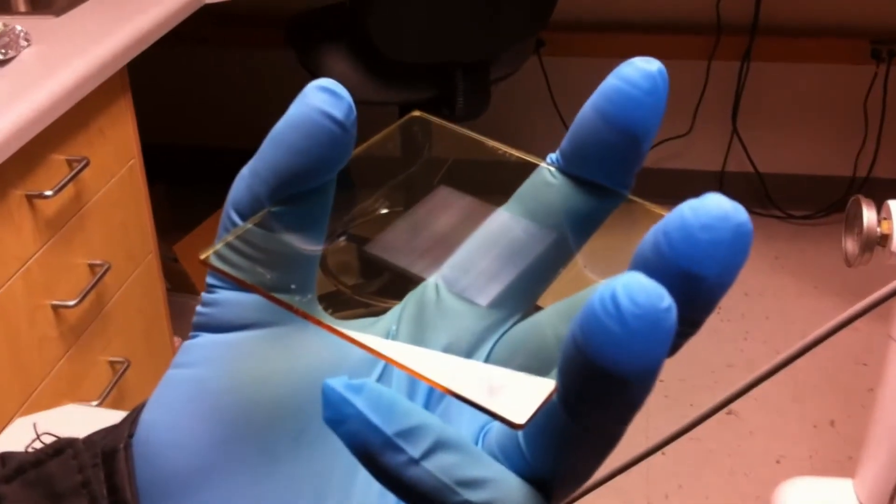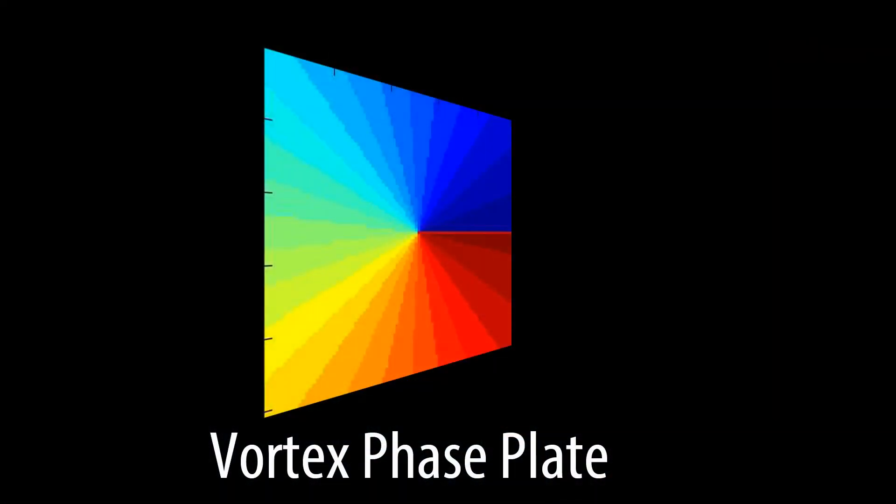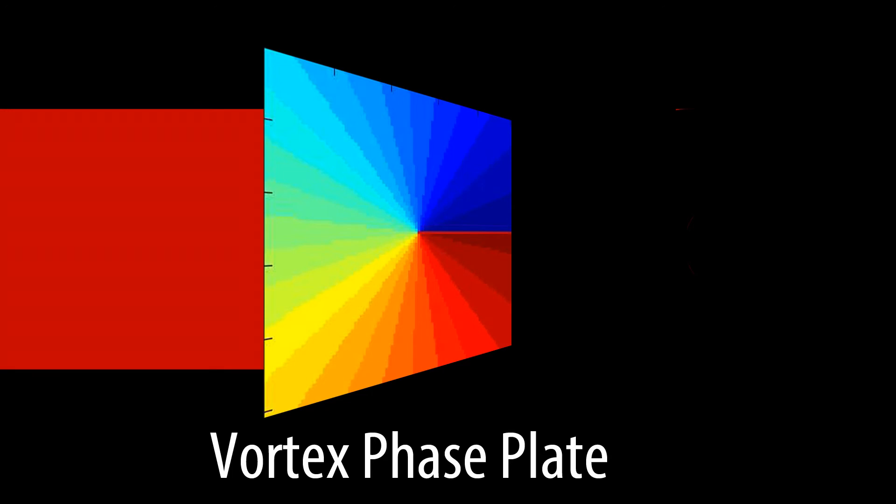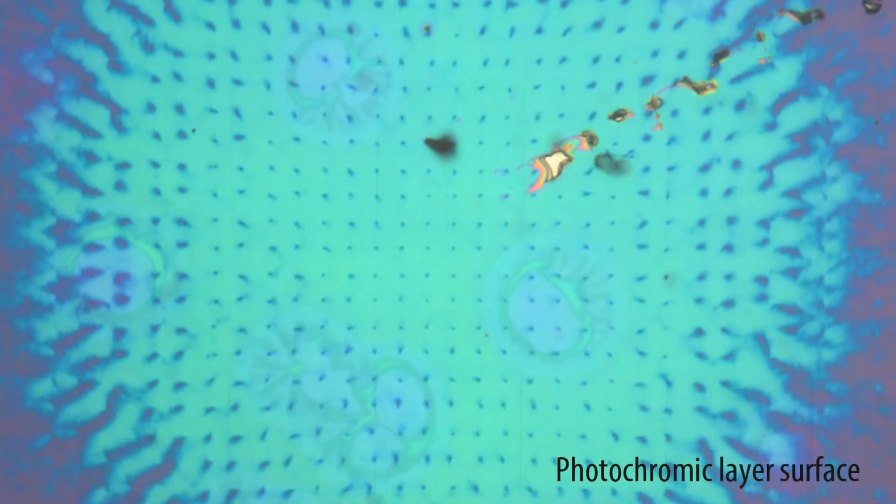Another way of creating the nodes in the red laser beam is to employ vortex faceplates. When the laser beam passes through these plates, a dark spot is created at its center. We are developing a matrix of these vortices to create an array of dots on the photochromic layer.